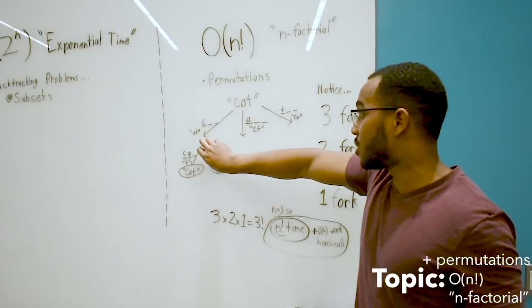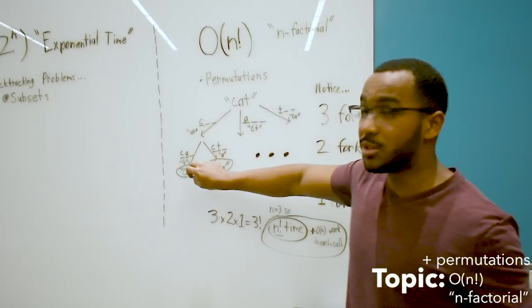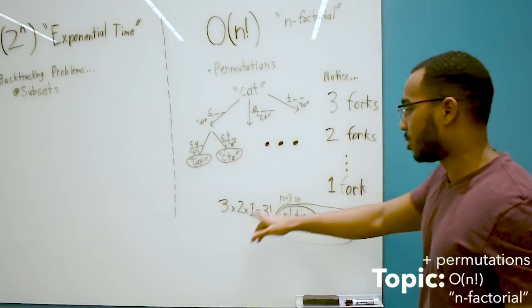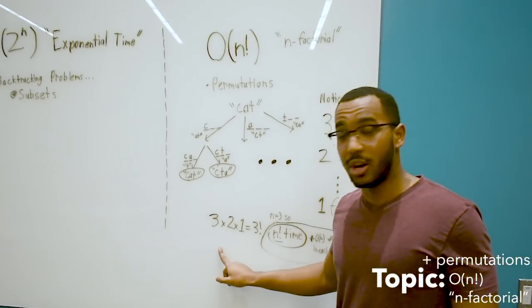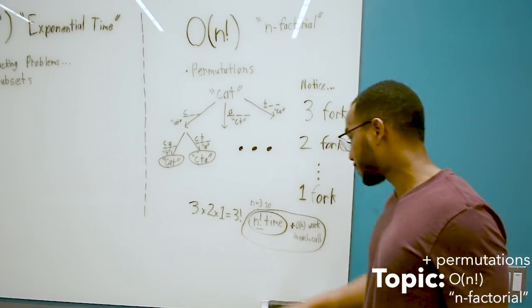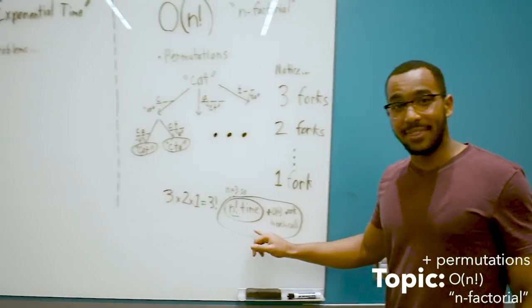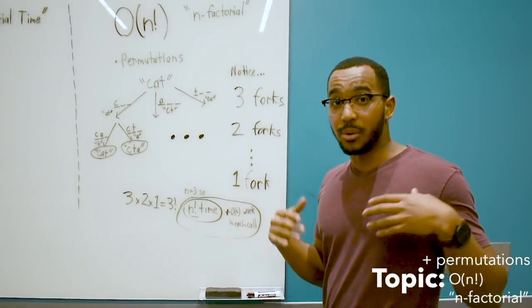What you need to notice is that for each of these three levels, we're going to be forking twice. For each of these twice fork levels, we're going to be forking once. It looks like three times two times one. What is three times two times one? That's three factorial. This is why we get n factorial time for the permutation problem.